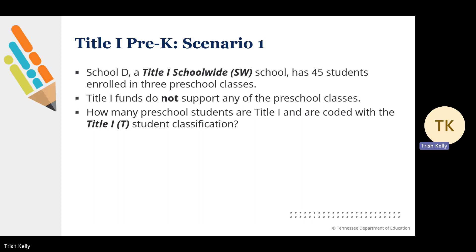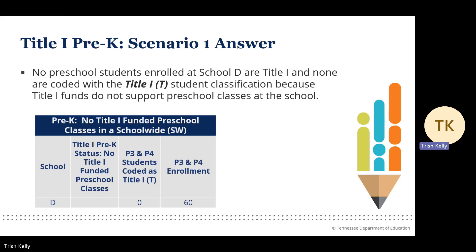Pre-K Scenario 1. School D, a Title I school-wide school, has 45 students enrolled in three preschool classes. Title I funds do not support any of the preschool classes. No pre-K students enrolled at School D are Title I, and none are coded with the Title I-T student classification because Title I funds do not support preschool classes at the school. This will be the case for most Title I schools — preschool students are only Title I if Title I funds support the class, which tends to apply to only a minority of preschool classes.